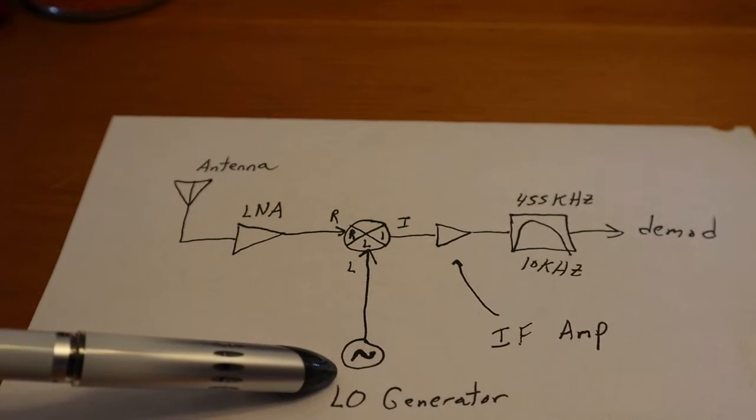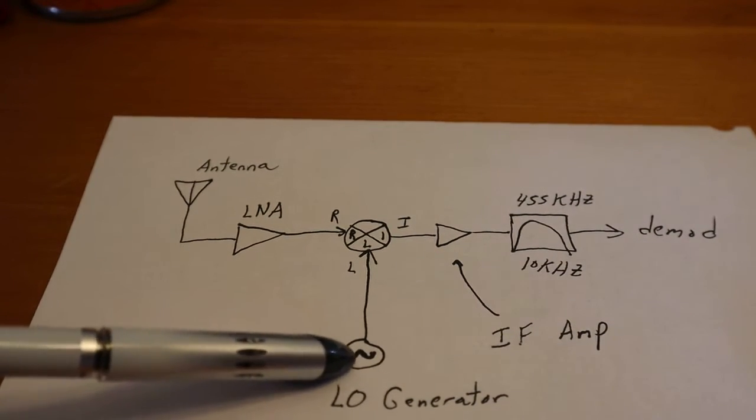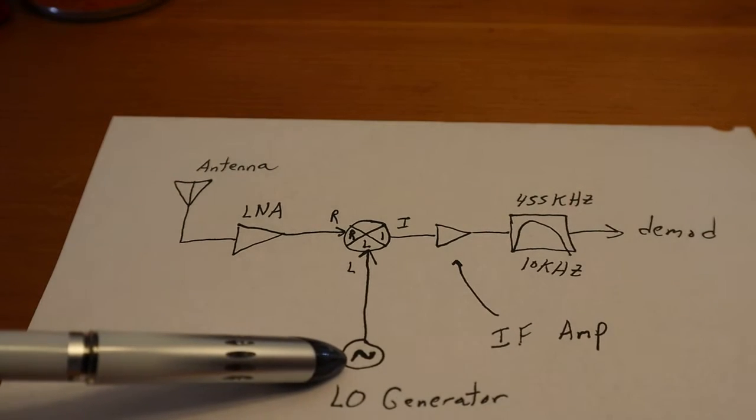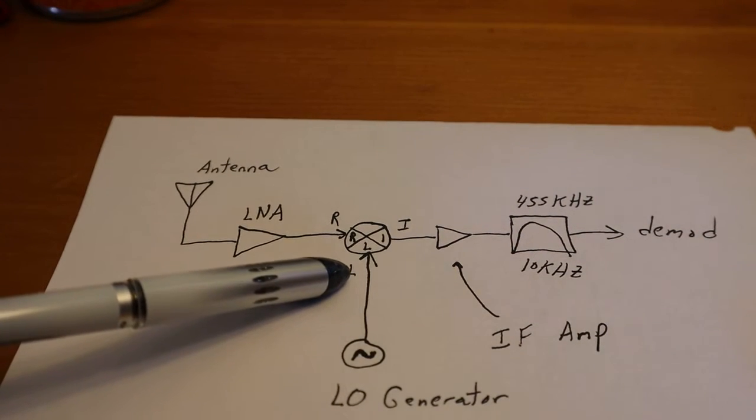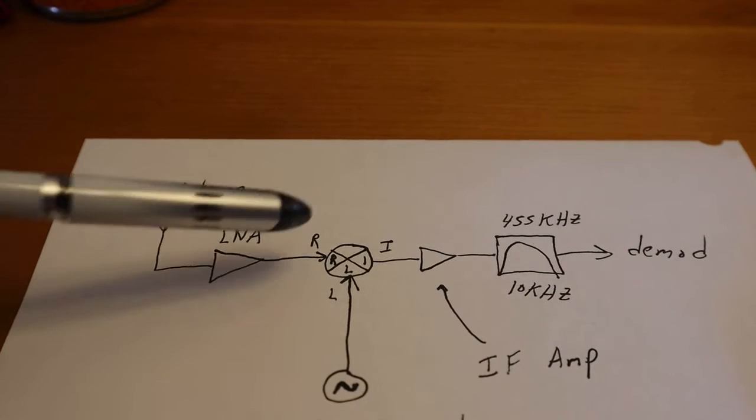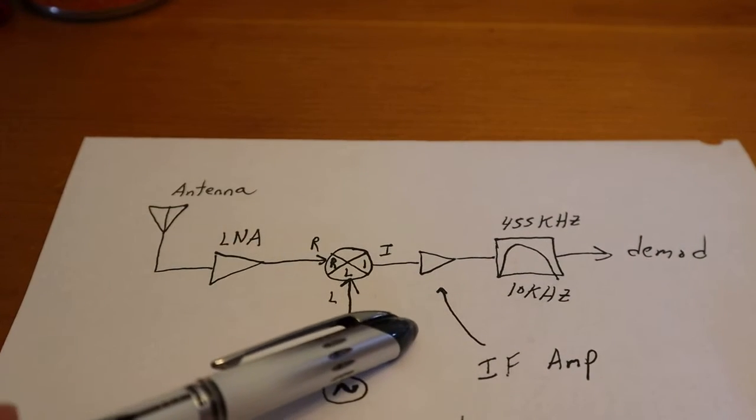It then comes into the mixer where it goes into the R port. Down here is a local oscillator. This is a local signal generator inside your receiver. And that goes up to the L port of the mixer. And here's the I or intermediate frequency port.